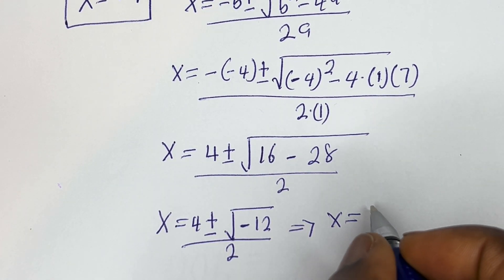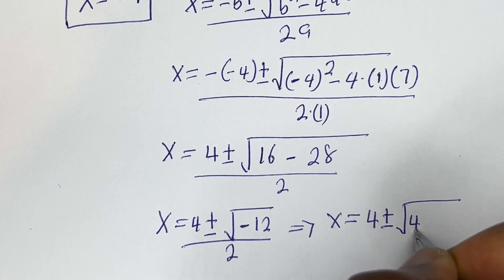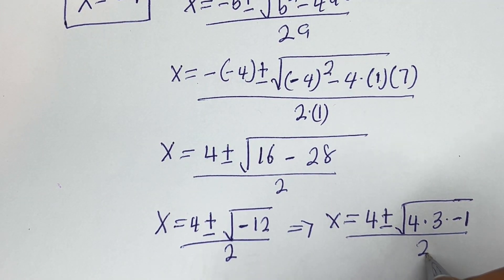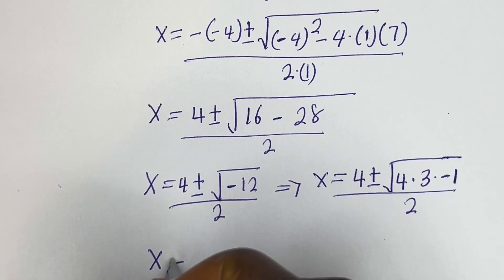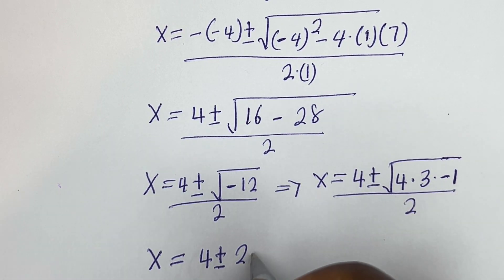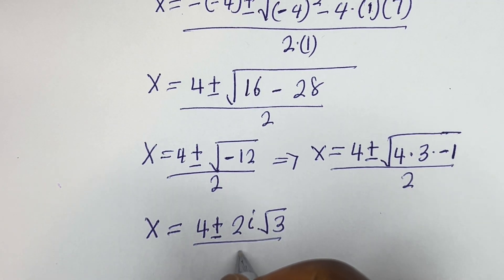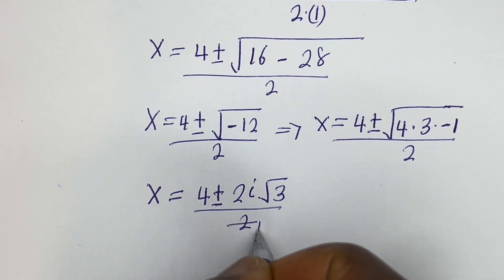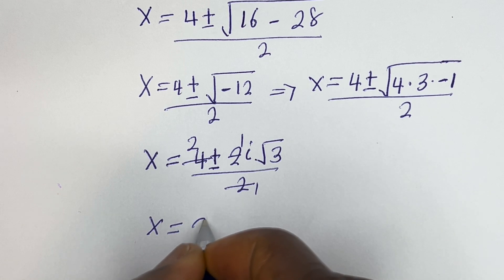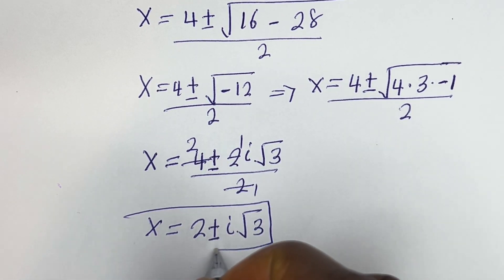The square root of minus 12 can be written as square root of 4 times 3 times minus 1, which equals 2i root 3. So x equals 4 plus or minus 2i root 3, over 2. Simplifying: x equals 2 plus or minus i root 3. These are also values of x.